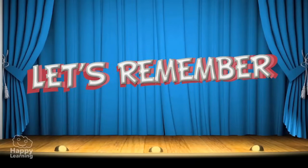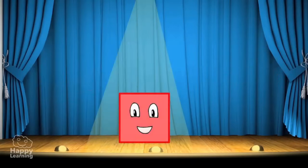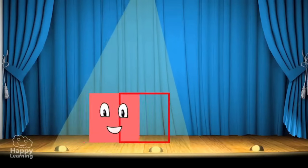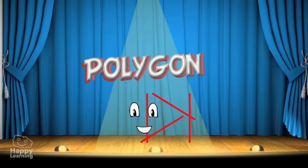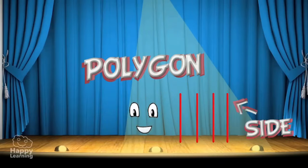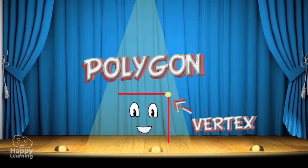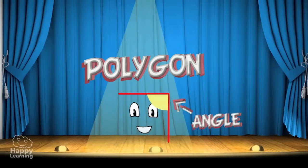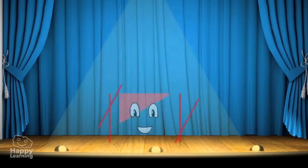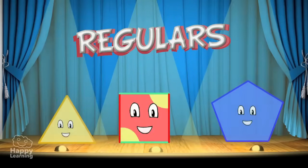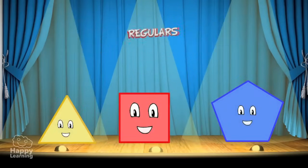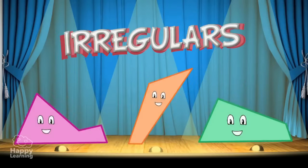Let's remember the important things about polygons. A polygon is formed by a closed polygonal line and the space inside it. A polygon has several elements: sides, corners or vertices, and angles. A polygon is regular if all its sides are the same length and all its angles are equal, and a polygon is irregular if the sides or angles are not equal.